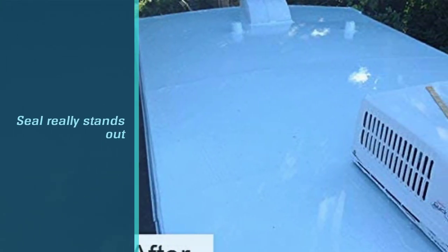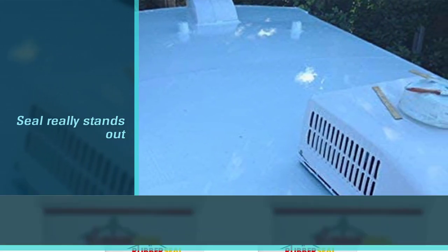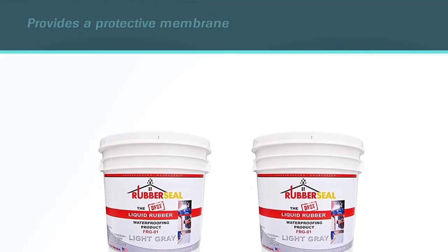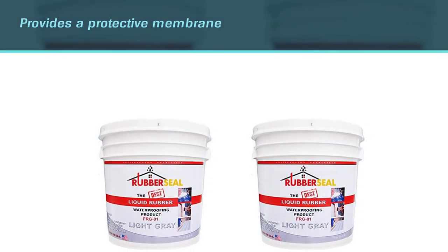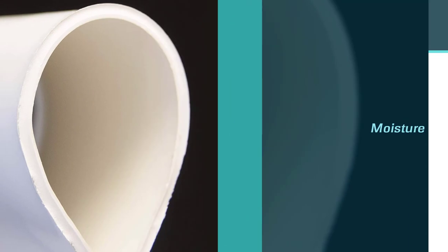Preventing damage from ponding water on flat roofs is where Rubber Seal's roof seal really stands out. It provides a protective membrane that's moisture resistant and virtually impenetrable to standing water, while also possessing high solar reflectivity to keep a roof cool and protected all summer long.